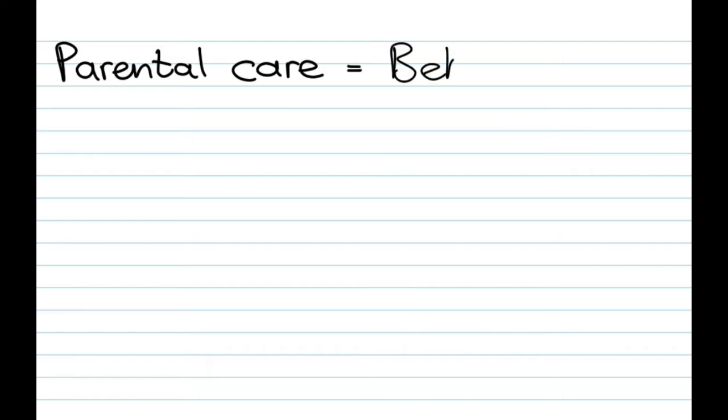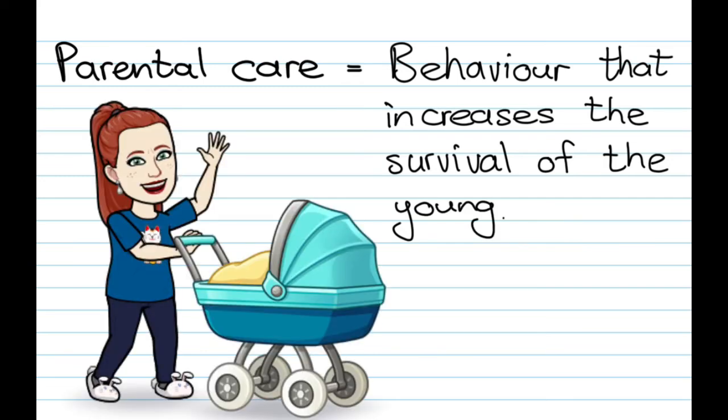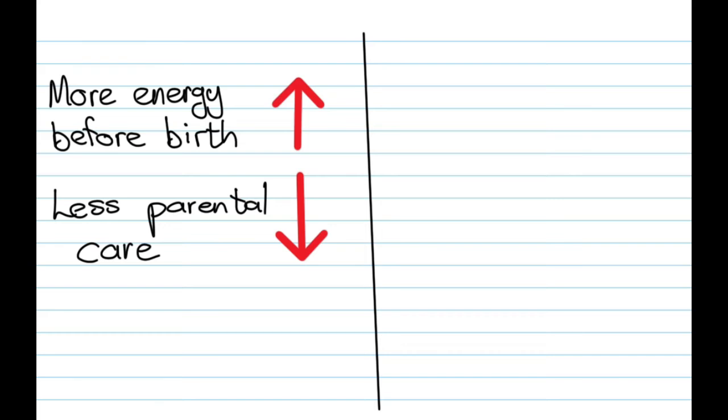Now parental care is behavior that increases the survival of your offspring. So it's something that a parent does to make an offspring survive longer. Now the thing is, the more energy is spent before birth, the less energy is going to be available for parental care because remember, only a certain amount of energy.